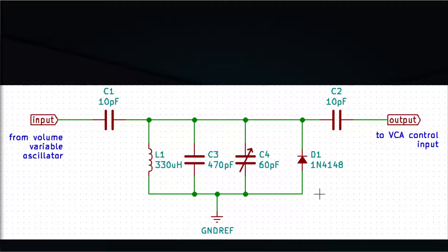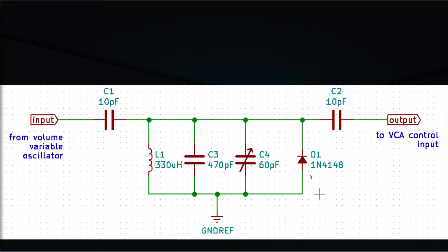The schematic of the Volume Resonant Circuit is very simple. It revolves around a simple parallel LC circuit. The inductor L1 and the capacitor C3 values are chosen so that the resonating frequency of the circuit equals the maximum frequency that the Volume Variable Oscillator can provide. The variable capacitor C4 is used to fine-tune the resonating frequency of the filter. Capacitor C1 is used to decouple the filter from the oscillator from the perspective of DC current. Similarly, capacitor C2 is used to decouple the filter from the VCA control input. Diode D1 is used to half-wave rectify the output signal so that the negative part is removed, leaving only the positive part.